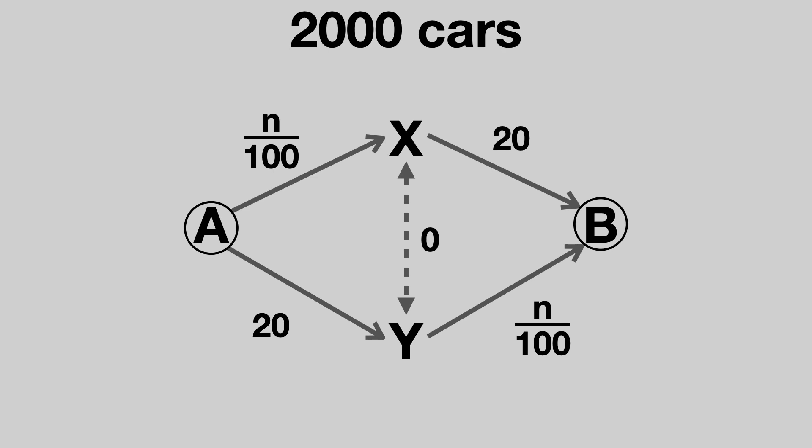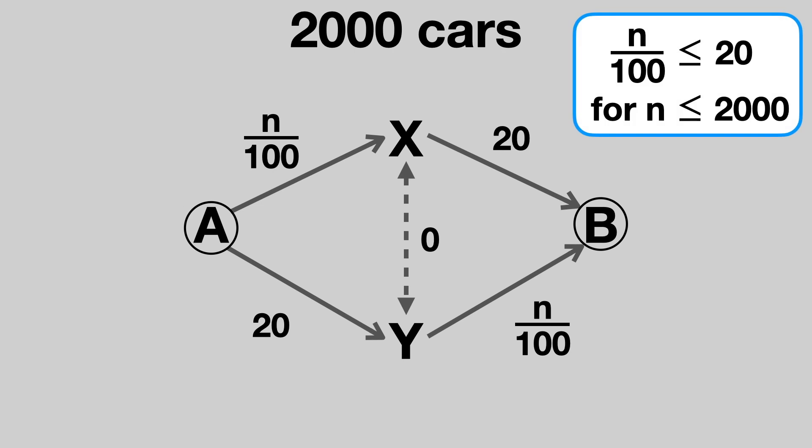Well, let's see what happens. Drivers will now notice they have an incentive to switch routes. This is because the N over 100 roads will always take at most 20 minutes. If everyone uses these roads, 2,000 over 100 is 20 minutes.